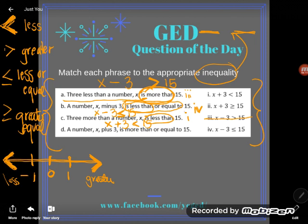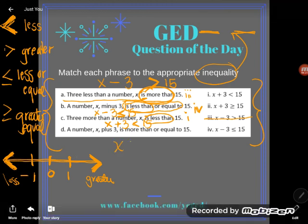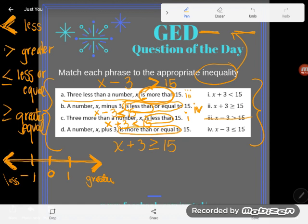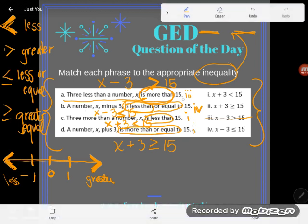Okay, so d better match with ii, or 2 in Roman numerals. Let's take a look. A number x, a number x, plus 3, plus 3, is more than or equal to, greater than or equal to, 15. And does that match with 2? It sure does. Great! So a is 3, b is 4, c is 1, and d was 2.